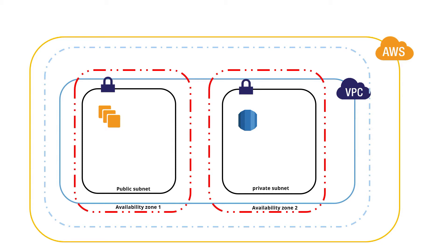Assume you have a database hosted in your private subnet and you need to connect to that database. One way is you log into your EC2 instance deployed in the public subnet and through that instance you connect to your database instance. Another way is you become part of the actual network — we'll see that later, just park that thought in your mind.